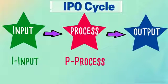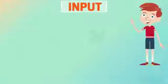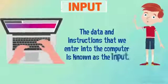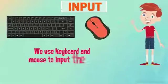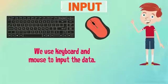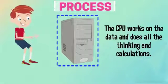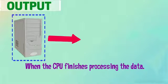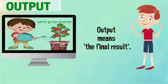I is for input, P for process, and O stands for output. The data and instructions that we enter into the computer is known as the input. We use the keyboard and mouse to input the data. The CPU works on the data and does all the thinking and calculations. When the CPU finishes processing the data, the output is displayed on the monitor. Output means the final result.